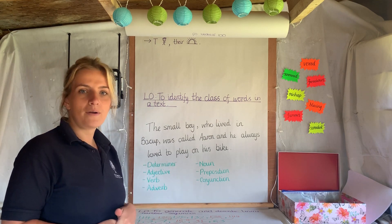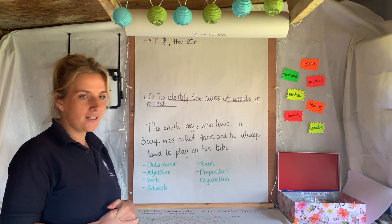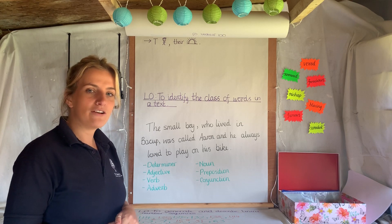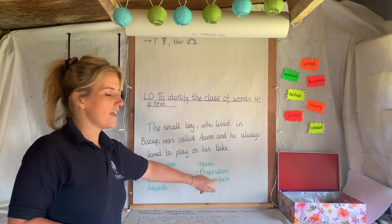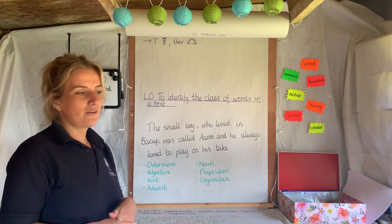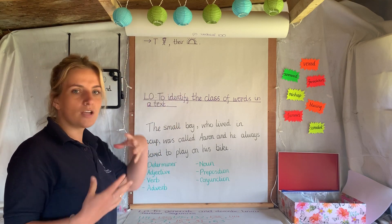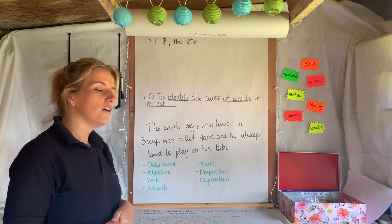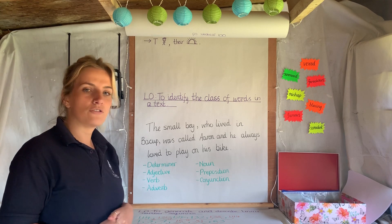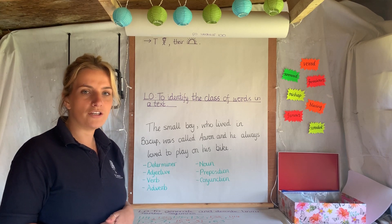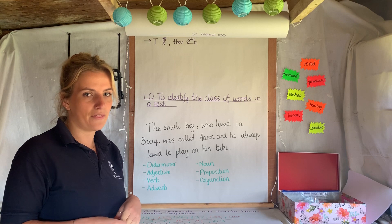Then we've got a noun, which as we know is a person, a place or a thing. A preposition tells you the position of something — so is it under? Is it over? Is it on top of? That kind of thing. And then finally we've got a conjunction. A conjunction, as we know, joins two phrases or sentences together.